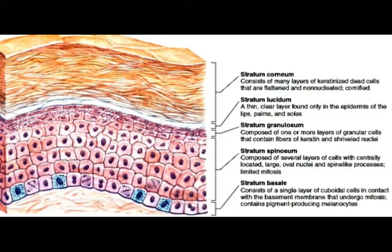Everywhere in the skin there are four layers; the second one, stratum lucidum, is present only in thick skin areas like palms and soles. So there are five layers in the epidermis, from outer to inner — from stratum corneum to stratum basale.